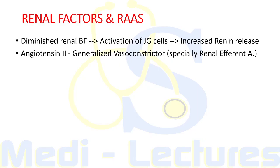Diminished renal blood flow due to decreased effective arterial blood volume leads to activation of juxtaglomerular cells, which increases renin release. These juxtaglomerular cells are specialized myoepithelial cells surrounding the afferent arteriole that signal renin release.